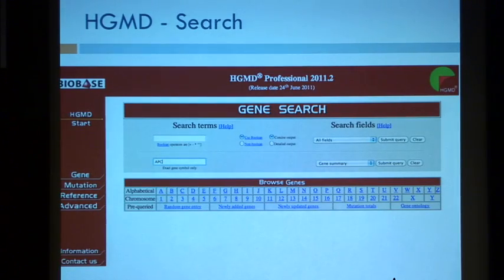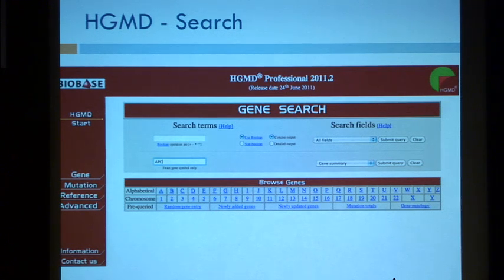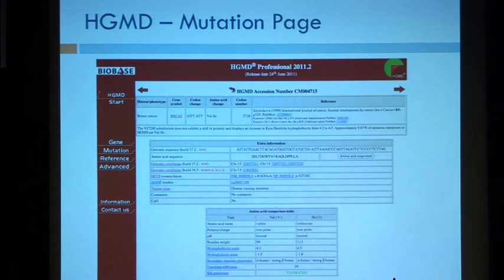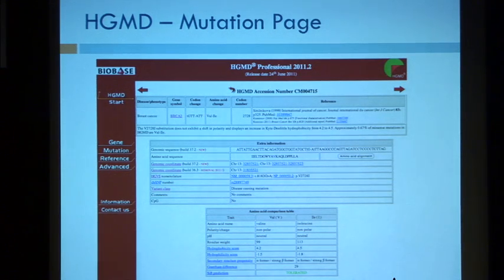In HGMD Professional you can search on gene or on mutation. VarSifter lets you plug mutation IDs directly in. One important thing: HGMD and any database uses amino acid nomenclature based on a specific reference transcript, and there are many transcripts for a lot of genes. So if you're searching based on amino acid position, you need to make sure that the transcript in the database is the same transcript you're using, or you're going to miss things because the nomenclature doesn't match up.